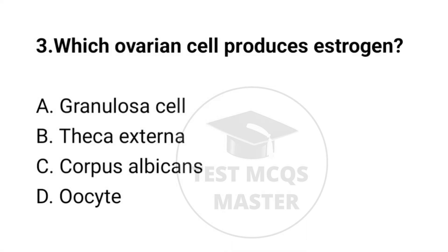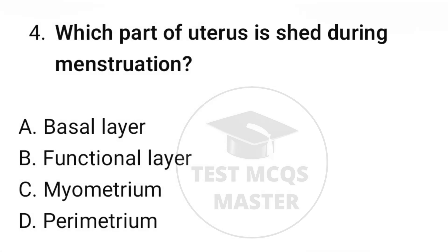Question number three: which ovarian cell produces estrogen? The correct option is A, granulosa cell. Question number four: which part of the uterus is shed during menstruation? The correct option is B, functional layer.